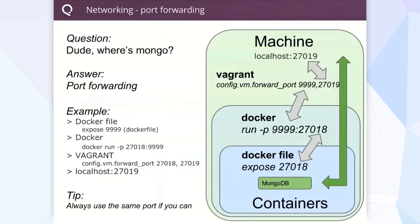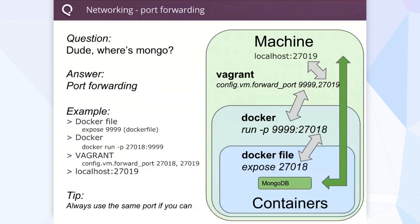We ran into two things when building this environment. One was networking and port forwarding, which gets a little complex. Starting with the Docker container itself, first you have to expose a port — in this case 9,999. Then you tell Docker to expose it using source and destination, which is critical. Then expose it to Vagrant, and then all the way out to your local host. So to get to that MongoDB UI, there are quite a few steps — it was tricky, but once we got used to it, it was easy.